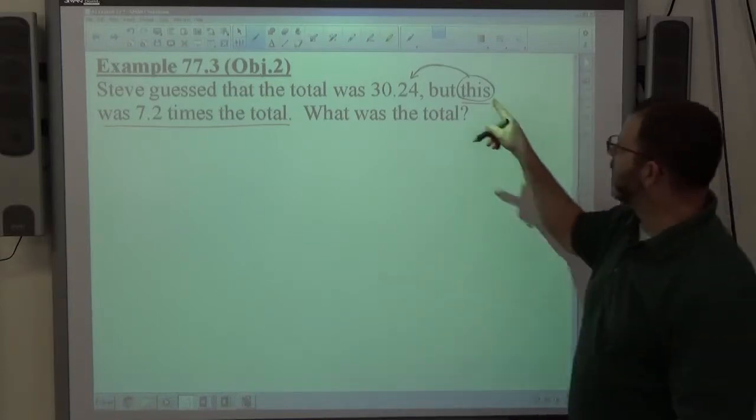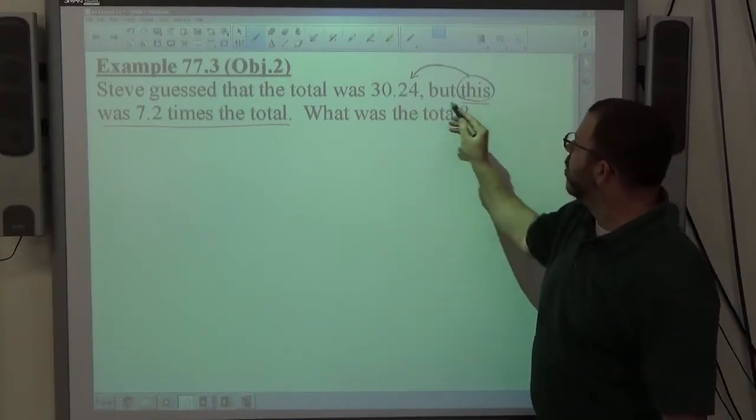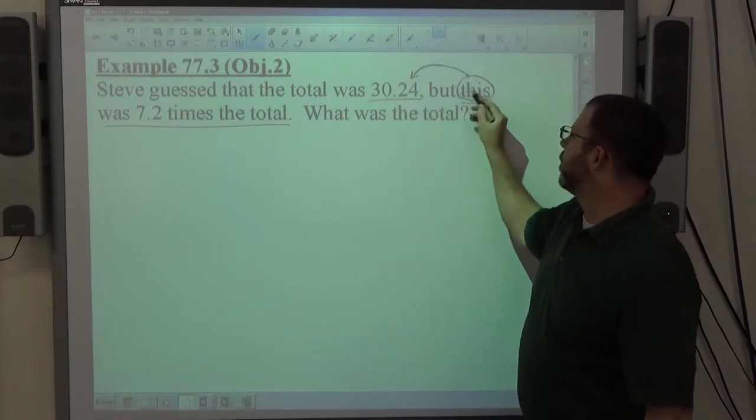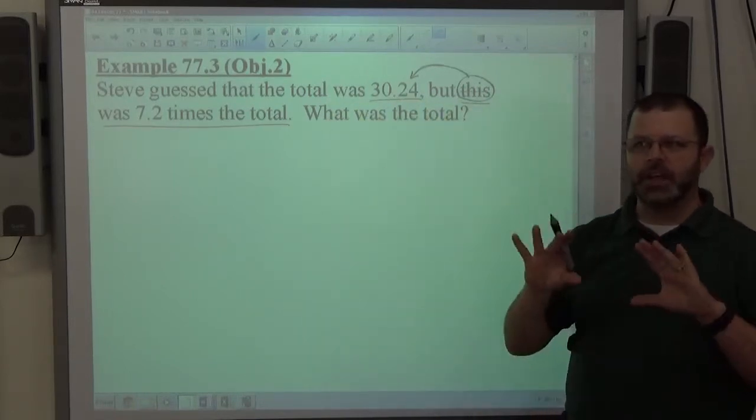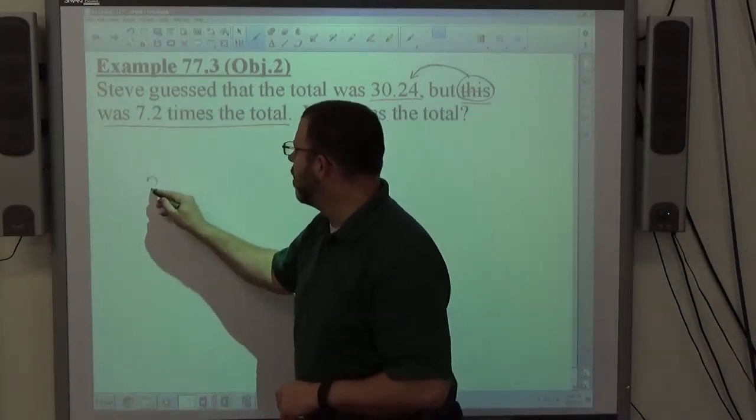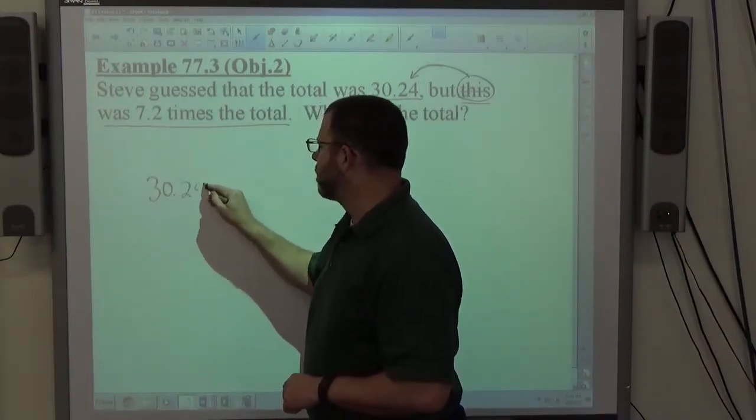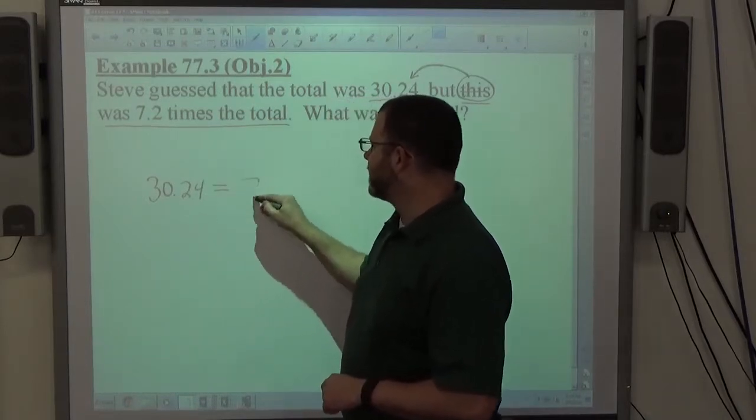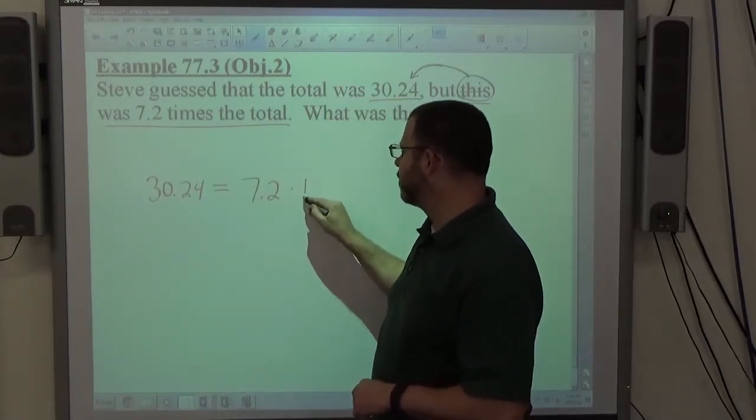So instead of even saying this was 7.2 times the total, we could just easily say 30.24 was 7.2 times the total. If I just take those words and directly translate it into an equation, 30.24 was 7.2 times the total.